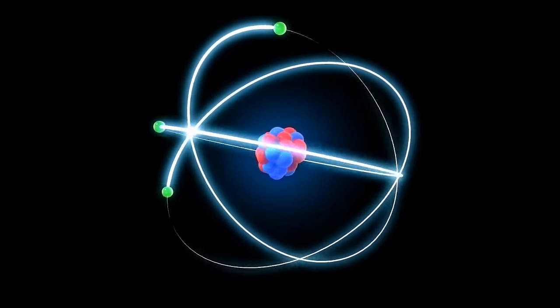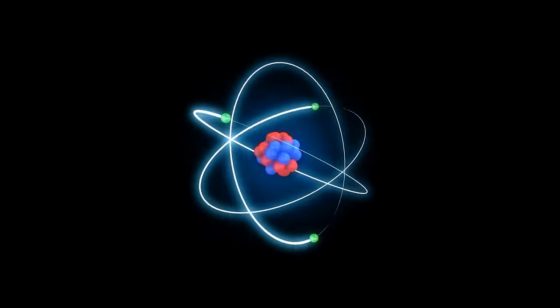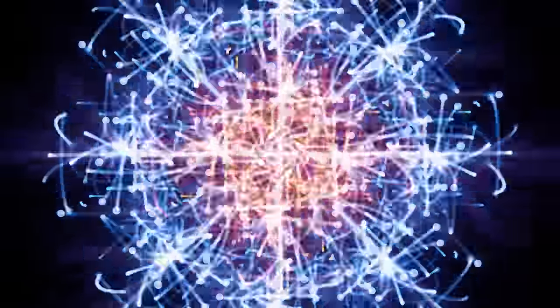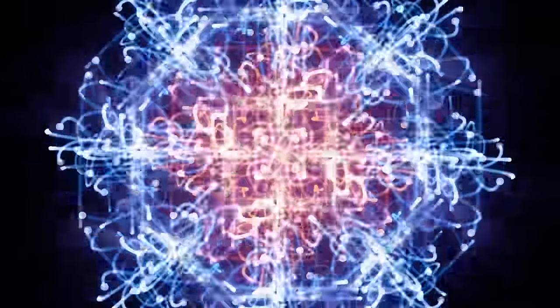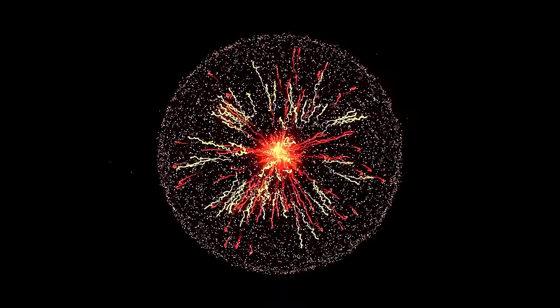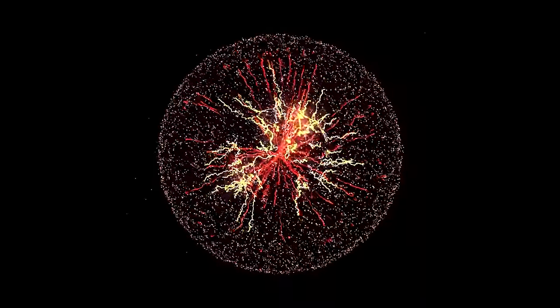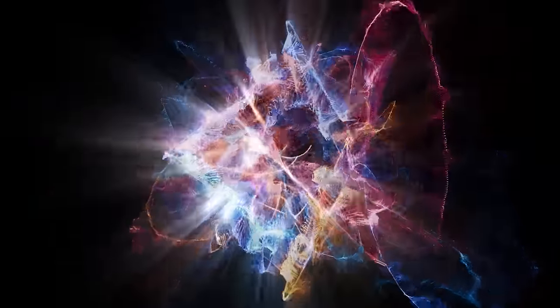In physics, neutrons are subatomic particles which, together with protons, form the nucleus of an atom. They have no electrical charge, so they are neutral and are slightly heavier than protons. Neutrons play an important role in the stability of atoms, as they balance the repulsive forces between the positively charged protons in the nucleus. Without neutrons, the protons would repel each other and the atomic nucleus would fall apart.